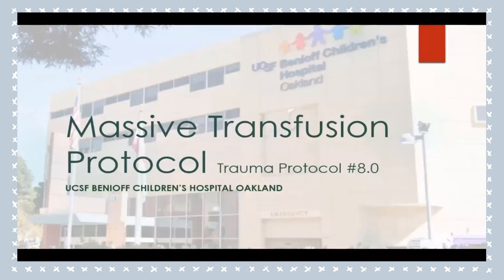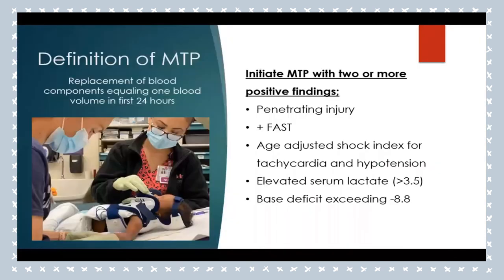This is the quick overview of Massive Transfusion Protocol — trauma protocol 8.0. Definition of MTP is replacement of blood components equaling one blood volume in the first 24 hours — for adults about five units of blood; for pediatrics, 70 mL per kilogram. Initiate MTP with two or more positive findings: penetrating injury, a positive FAST, an age-adjusted shock index for tachycardia and hypotension, an elevated serum lactate greater than 3.5, or a base deficit exceeding negative 8.8.